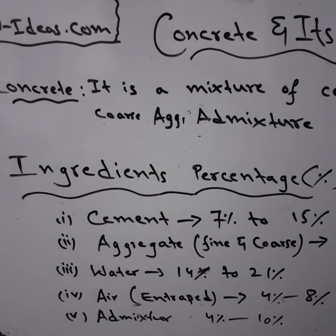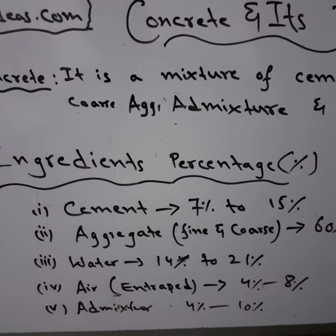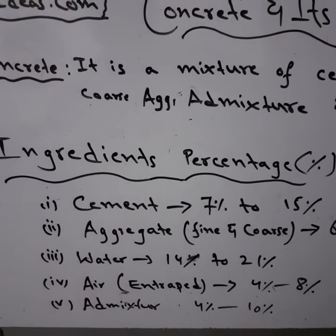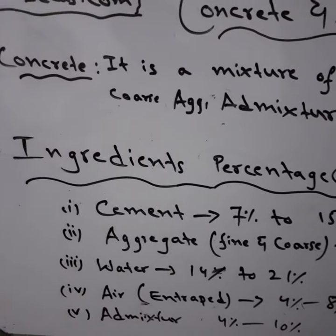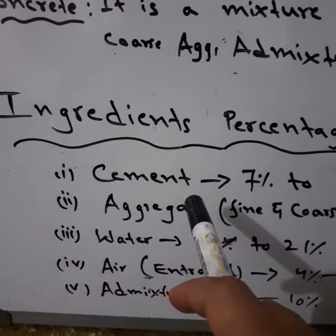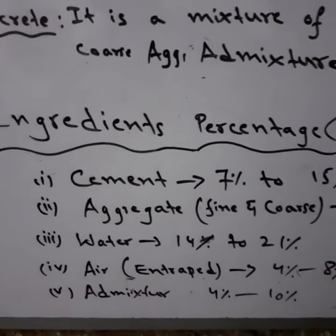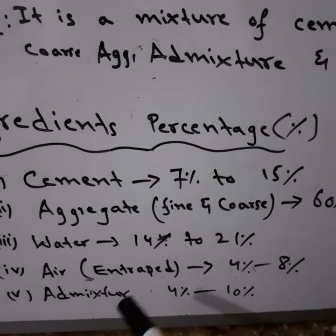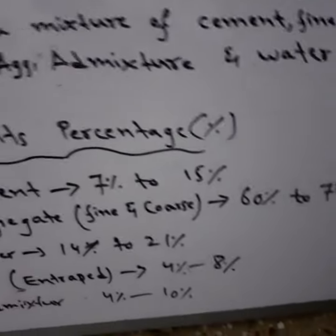So there are four to five ingredients used in a concrete mixture. The ingredient percentages are: cement is used from 7 to 15 percent, and it depends upon the ratios as already mentioned.